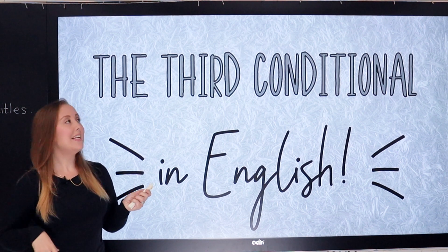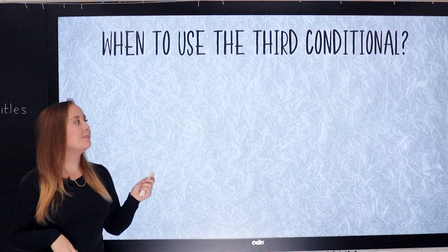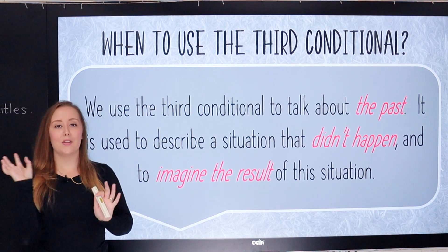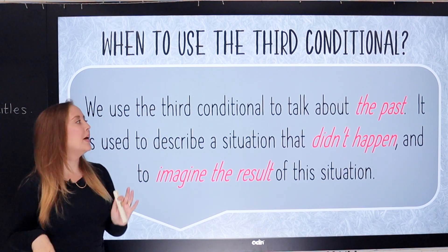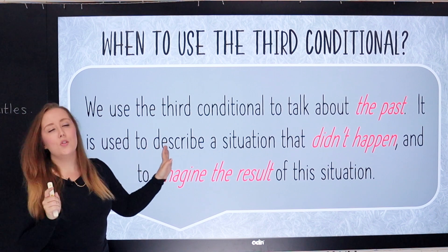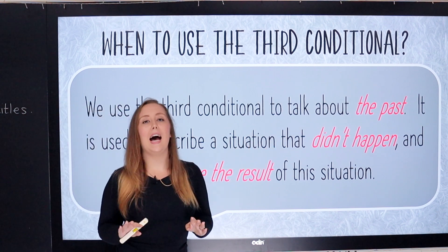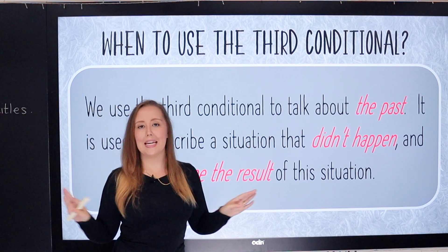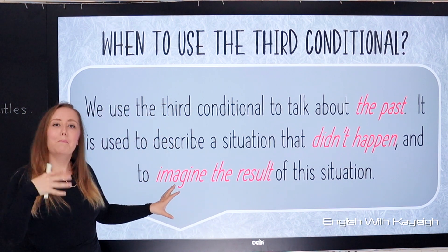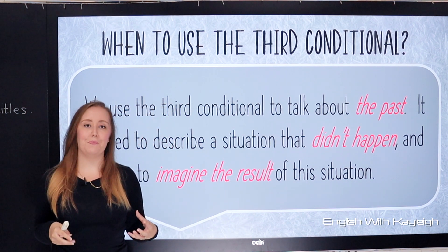So first, let's take a look at when to use the third conditional. We use the third conditional to talk about the past. It's quite special because it's used to describe a situation that didn't happen — it didn't occur. And we imagine the result of this situation.